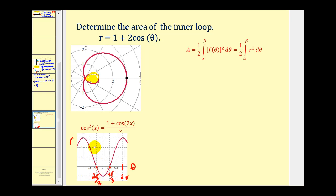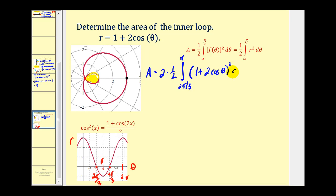What I think might be easier to do on this problem is to trace out half of the loop and then just double this area formula. So we're going to use limits of integration from two pi over three to pi radians and then just double that area. Between two pi over three and pi radians, we'd be tracing out the bottom half of the inner loop. So we're going to have two times one half, because we're doubling the area of half of a loop, integrating from two pi over three to pi of one plus two cosine theta squared d theta. Let's get our graphing calculator out and verify these limits of integration.